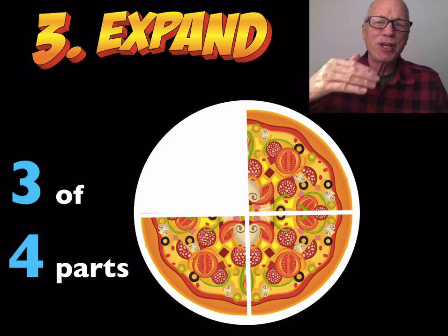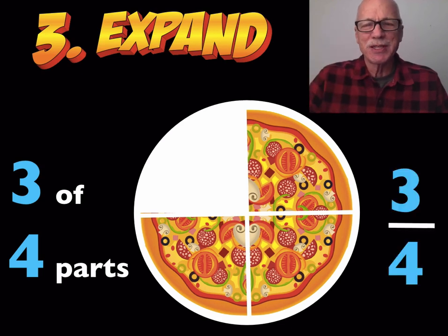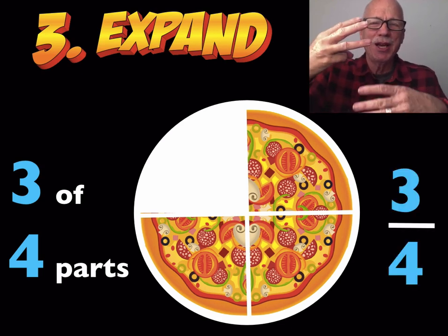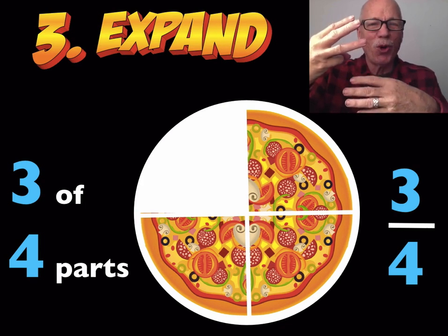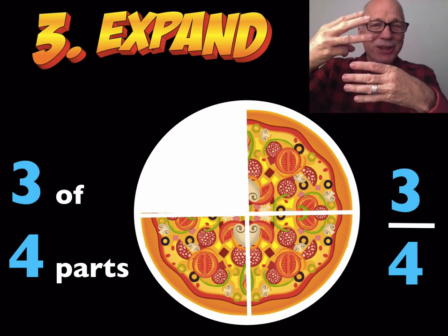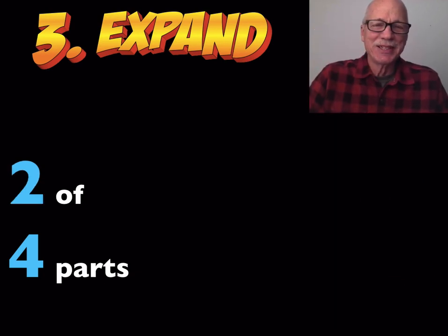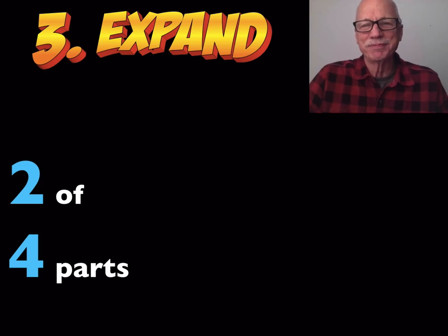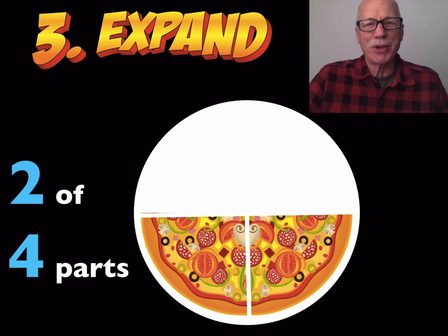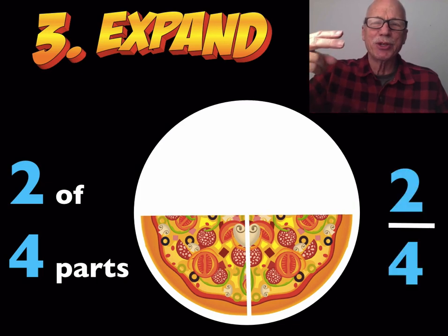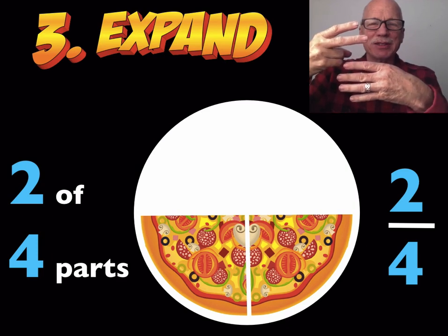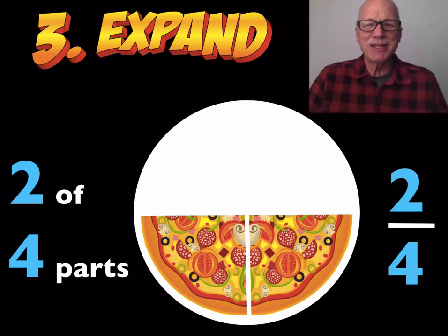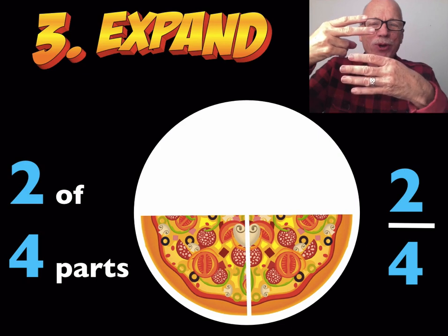A pizza showing you three of the four parts. Let's make a fraction — three of four parts of a whole. You can see the three parts. Again, two of four parts. There's the pizza. And now I'm going to show you two of four parts of the whole. This is the fraction — it's the same as the other pieces, it's just one number over another number.